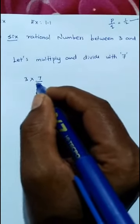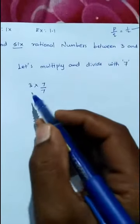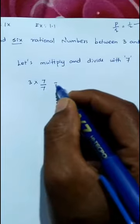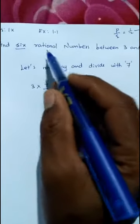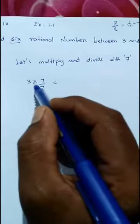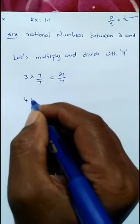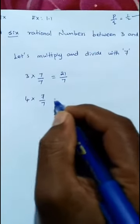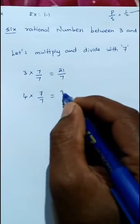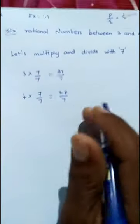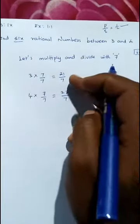We are multiplying and dividing to get the rational number only. So multiply: 3 times 7 equals 21 by 7. Same thing you do: 4 into 7 by 7, so 4 sevens are 28 by 7. Now easily you can find out between these two, six rational numbers.